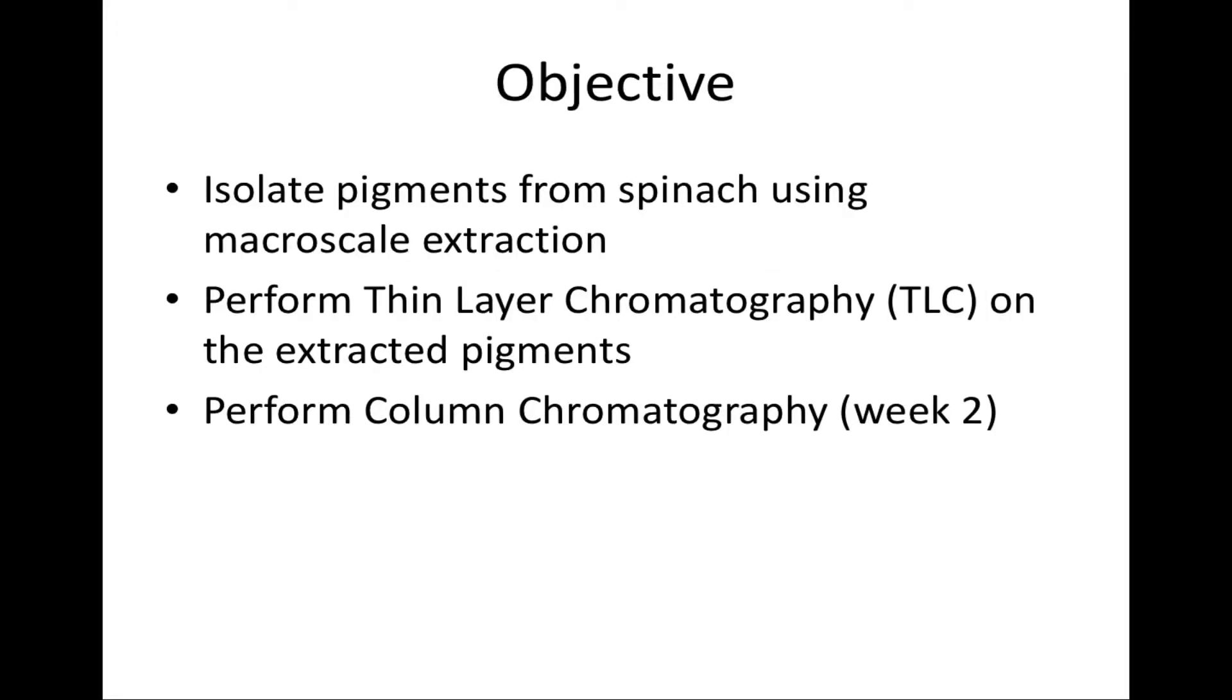The goal is to isolate the spinach pigments using extraction. The pigments are later analyzed using thin layer chromatography, TLC, and then the chlorophylls and carotenes will be separated from the rest of the pigments using column chromatography.